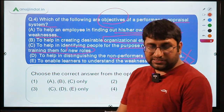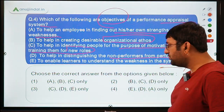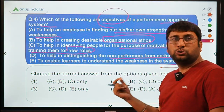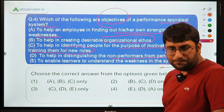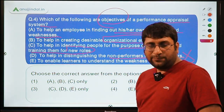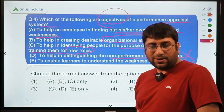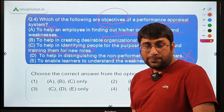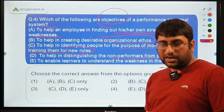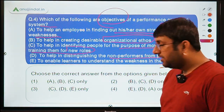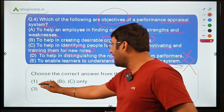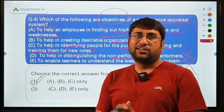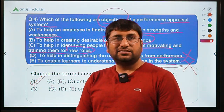So the majority answers coming in are for option A — objectives 1, 2 and 3. Priya says A, Nikita says A, Arpit says A. That is absolutely correct. Very well done. If anyone has any doubts, please ask in the chat box.